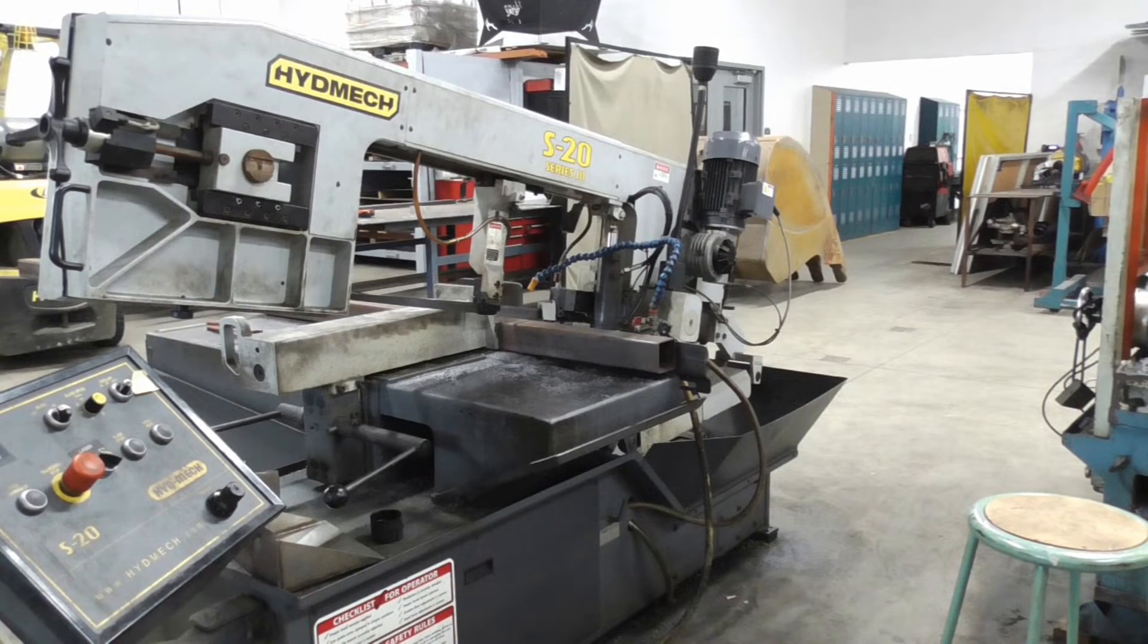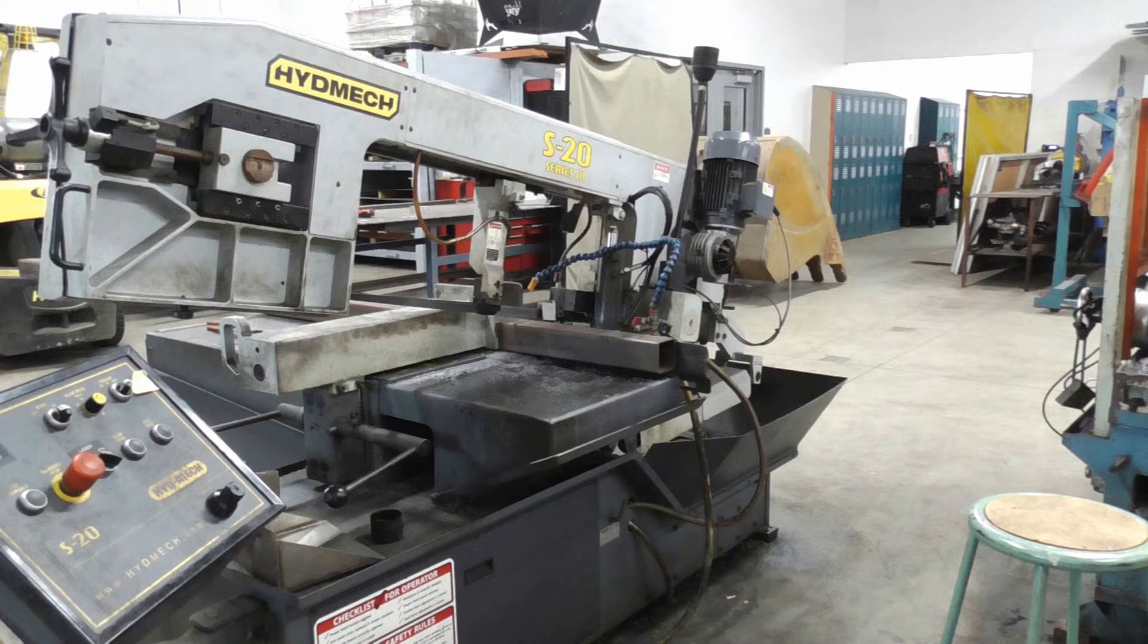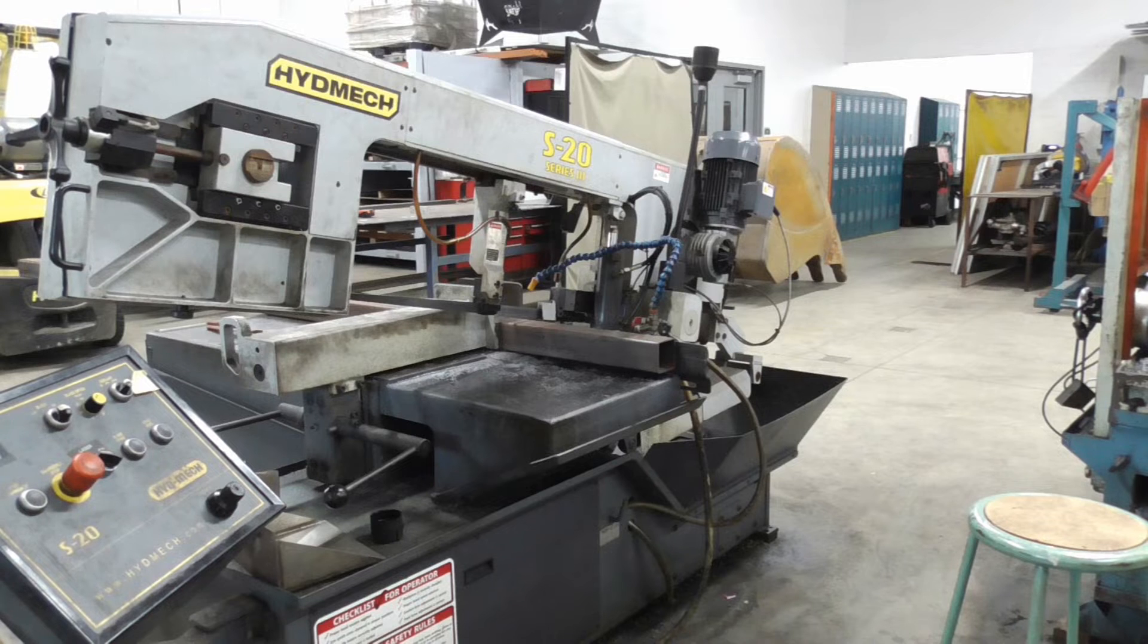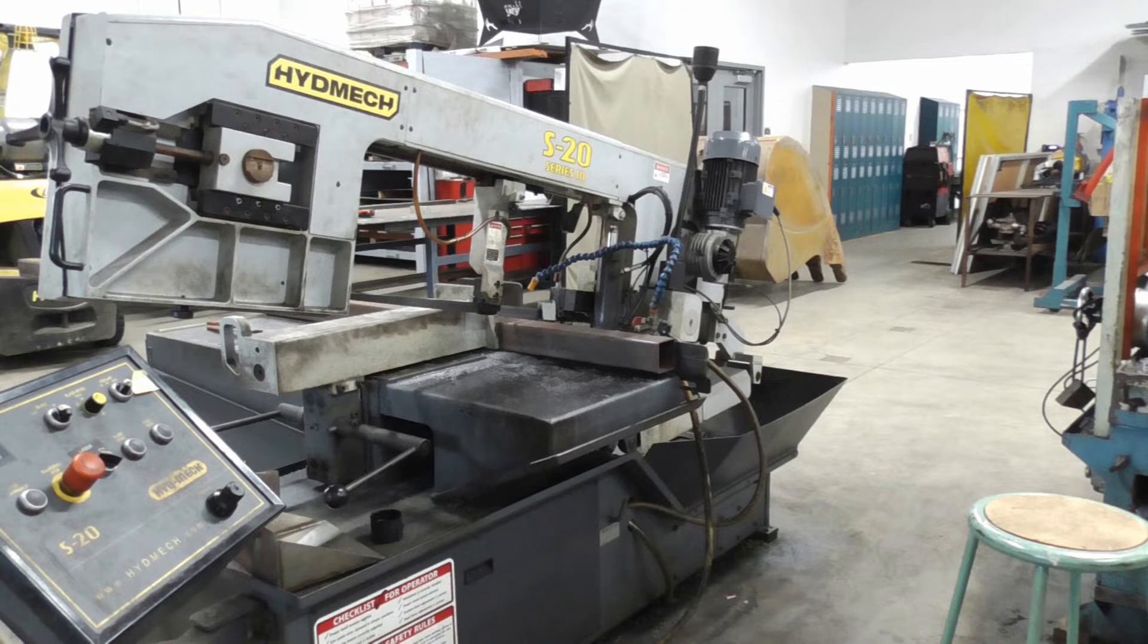Alright, so here's a shot of 18 inches measured out on that 3 inch by 3 inch square tube, it's in the band saw. We're going to cut it, this will be the upright of our rocket stove, and then we'll start doing the side tubes.